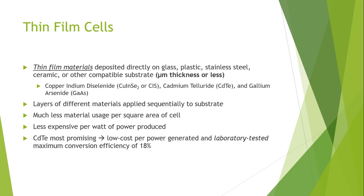The other type is gallium arsenide. Gallium arsenide thin film solar structures have reached an efficiency of about 30 percent in lab environments, but they are very expensive to manufacture. Cost has been a major factor in limiting the market for gallium arsenide solar cells. Their main use has been in spacecraft and satellites.